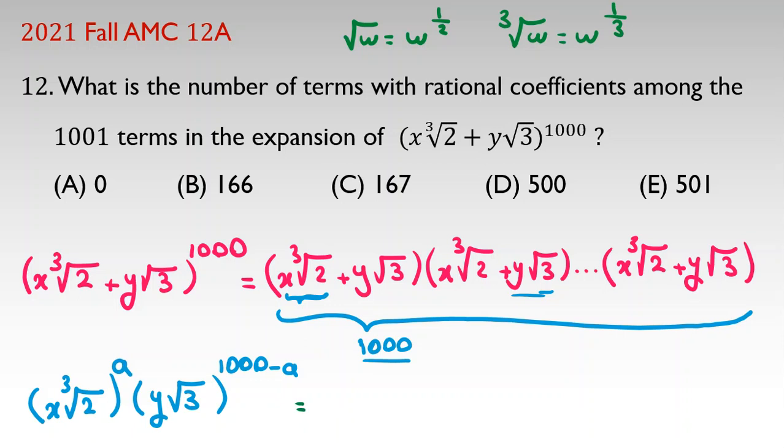Here, x and y are not important, because we want to find coefficients. So, it will be cube root of 2 to the power of a, times square root of 3 to the power of 1000 minus a.